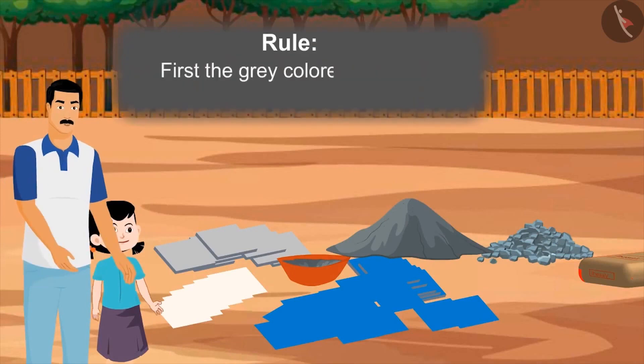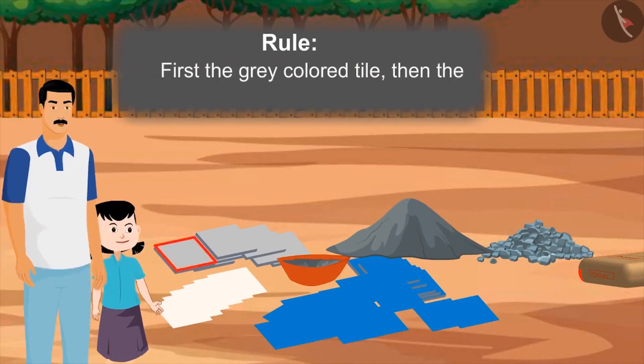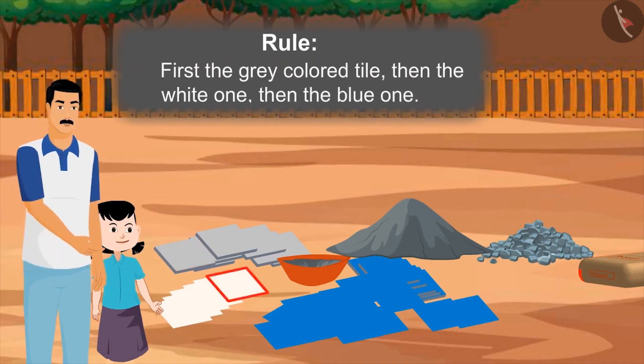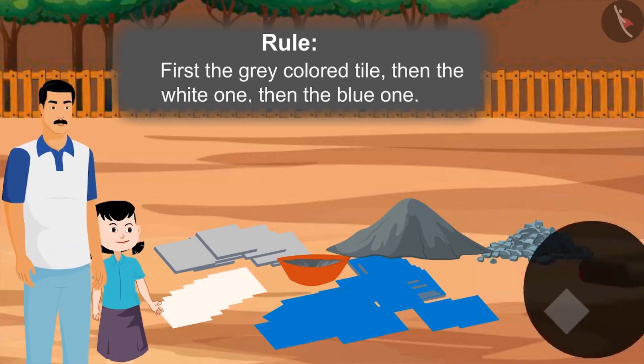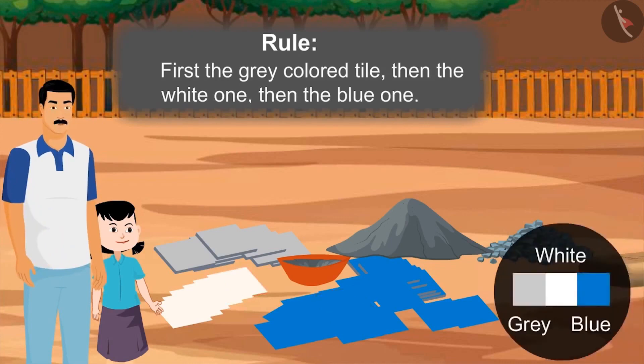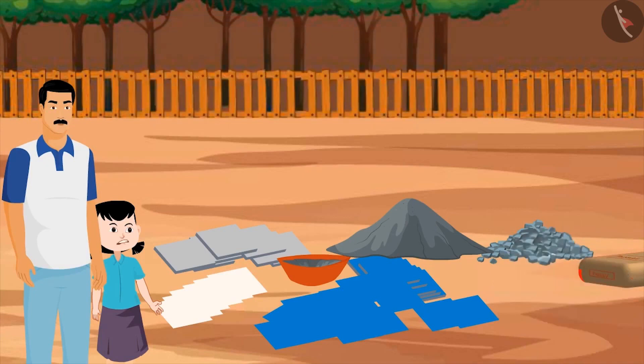First, we will put the grey colored tiles. After that, we will place the white one. And after that, the blue one. And make sure to put the tiles in this order only, so that all of them make a beautiful pattern. Okay, uncle. Now, can I put the tiles? Yes, of course.